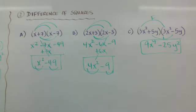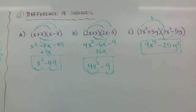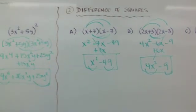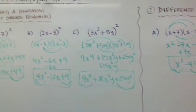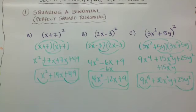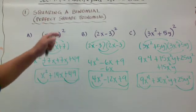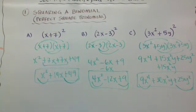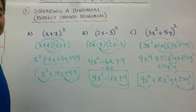That's section 9.4, multiplying special cases. Difference of squares is one special case, and perfect square trinomials — squaring a binomial — is the other. Take care.